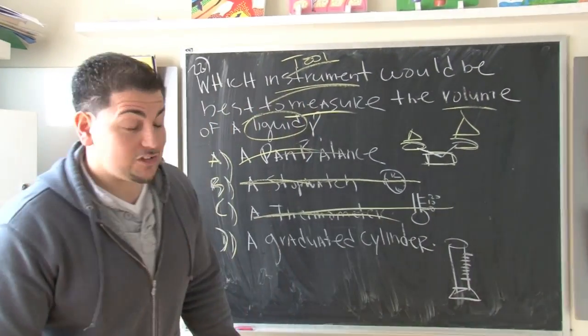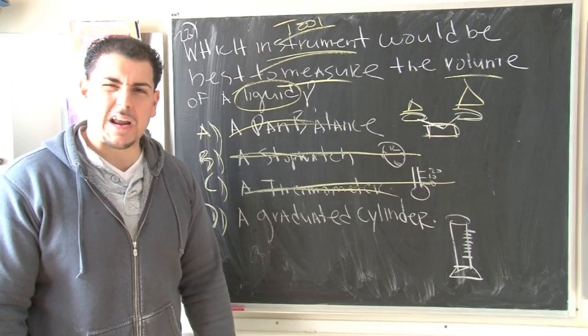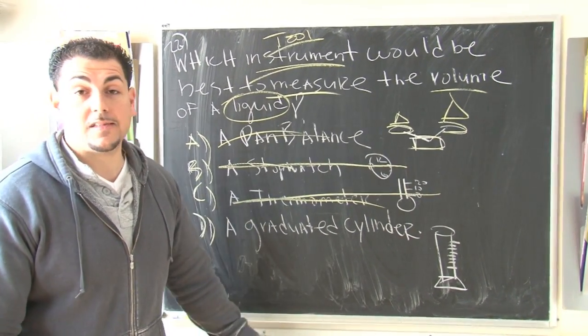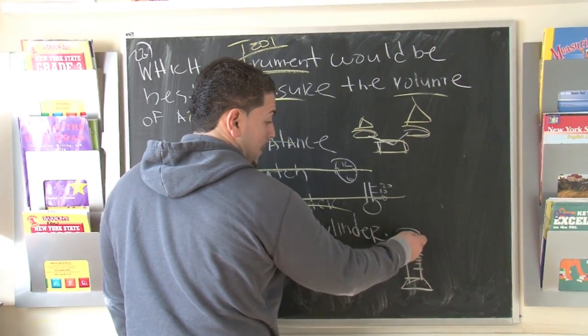Okay, so that leaves us with the last choice. D. A graduated cylinder. Alright? Very fancy science word. Graduated cylinder. The reason they call it graduated is because the levels go up.